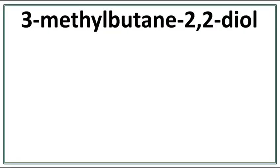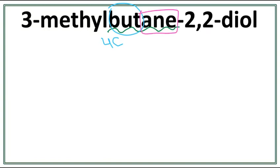Let's draw the structure for 3-methylbutane-2,2-diol. This is an alcohol, and the name of the parent chain is butane. 'But' tells us that there are 4 carbons present in the longest carbon chain. 'Ane' tells us that there are only single bonds present between carbons.